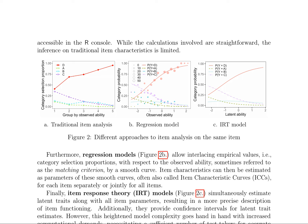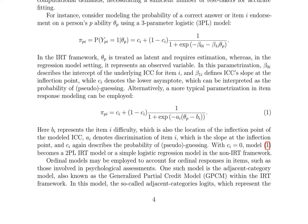The three-parameter logistic (3PL) model is a common IRT model, which estimates the probability of a correct answer or item endorsement based on a person's ability. The model parameters, such as the intercept, slope, and lower asymptote, describe the item characteristic curve. Alternative parametrizations, such as the two-parameter IRT model or the adjacent category model, can be employed to account for different types of item responses.